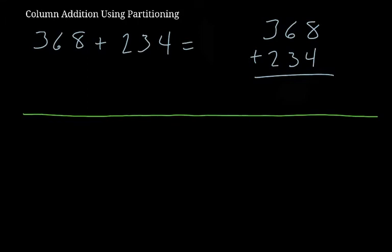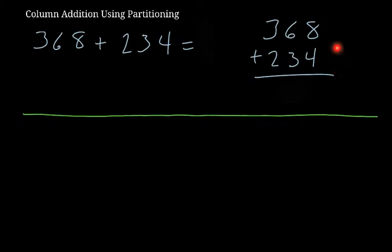In this video I'm going to look at column addition using partitioning. As you can see, we've got 368 plus 234. You can write it horizontally like this, and obviously you can also see it written vertically as well. I'm going to demonstrate how you partition these numbers and then add them, and there will be some carrying into another column.